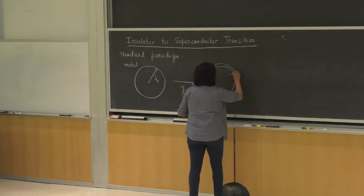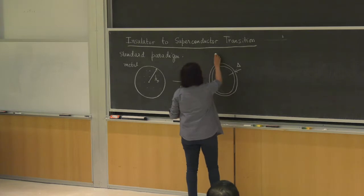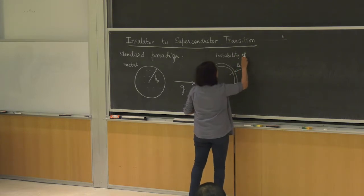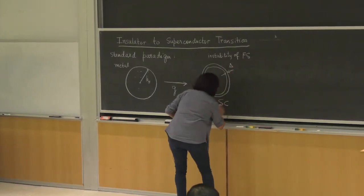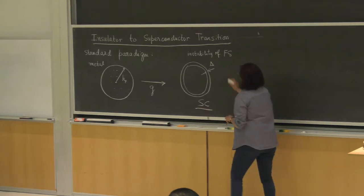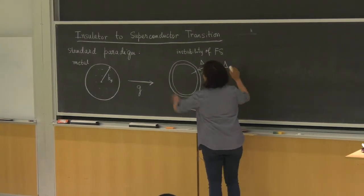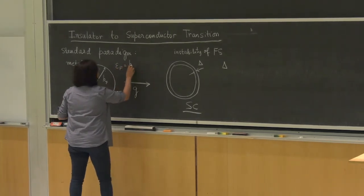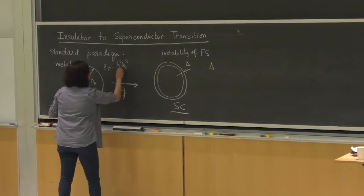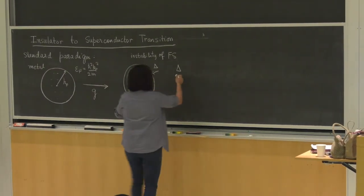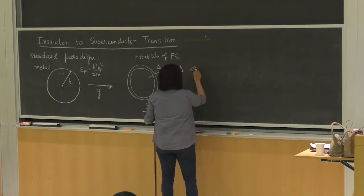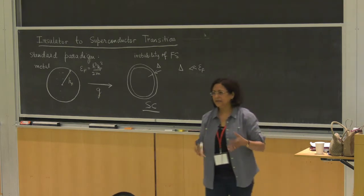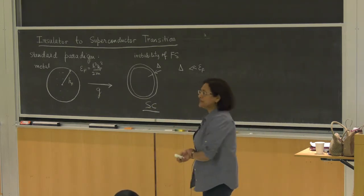So here is the gap, delta. This is an instability of the Fermi surface, and you get a gap which is much, much smaller than the scale E_F. In the metal the scale was set by the Fermi energy, and when it gets unstable, delta is exponentially smaller than E_F. That is our standard paradigm.